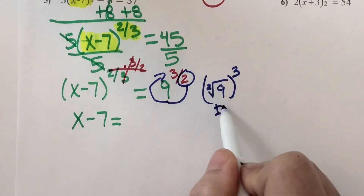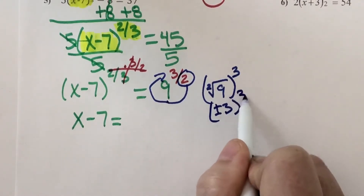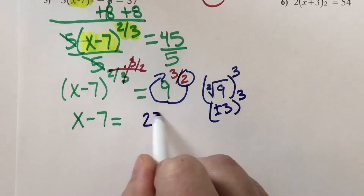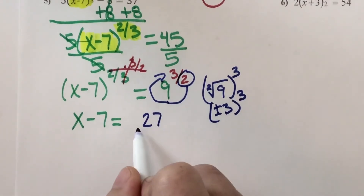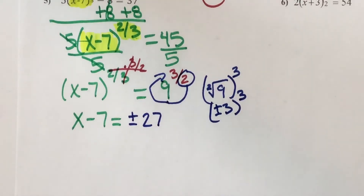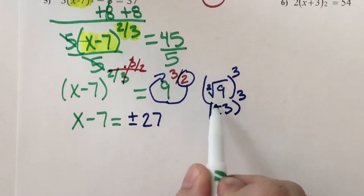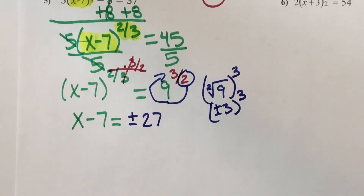The square root of 9 is plus or minus 3. And then I'm going to raise that to the third. 3 times 3 times 3 is positive 27, and negative 3 times negative 3 times negative 3 is negative 27. So this is plus or minus 27. If this denominator is ever even, you need to slap down a plus minus the minute you take that even root — because when you take an even root, there's a plus minus.